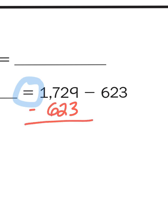Well, this one is pretty easy, because once I have the place values in place in a vertical column, I can see that there's no regrouping involved. I can just straight up subtract 9 minus 3 is 6, 2 minus 2 is 0, 7 minus 6 is 1, and then I bring down the 1 in the thousands. So my answer is 1,106.